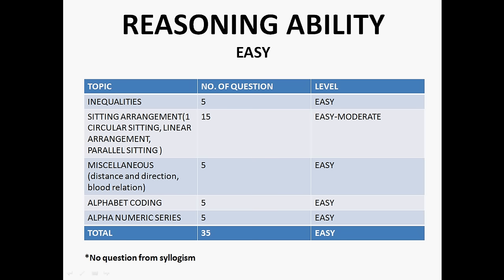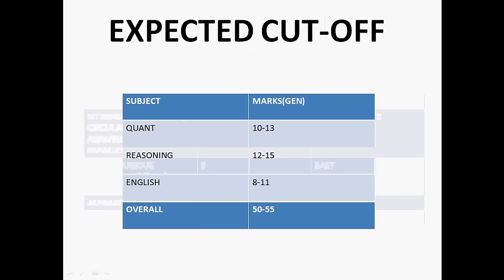Now let's see the expected cutoff. In quant cutoff will be around 10 to 13 marks, and in reasoning it will be around 12 to 15 marks, and in English it will be around 8 to 11 marks. These are sectional cutoffs. Overall it will be around 50 to 55 marks.